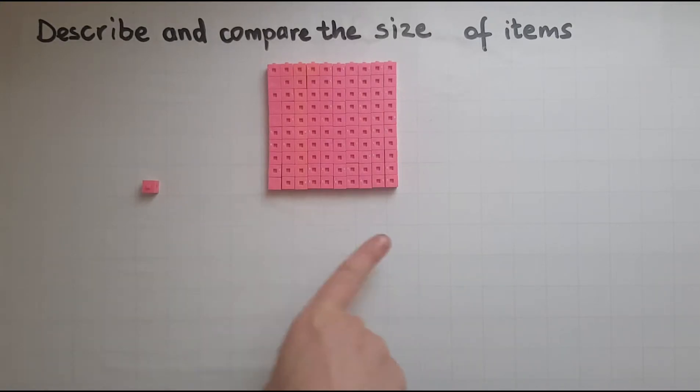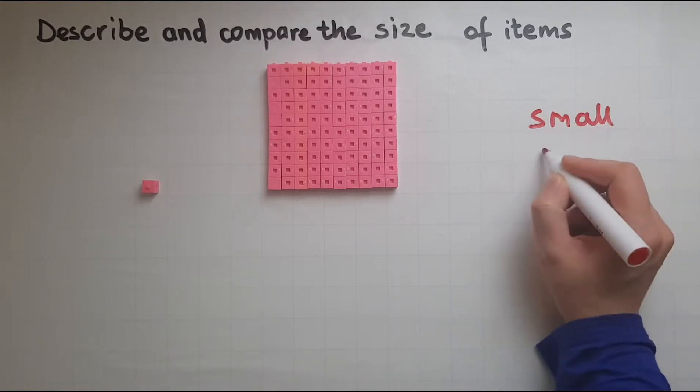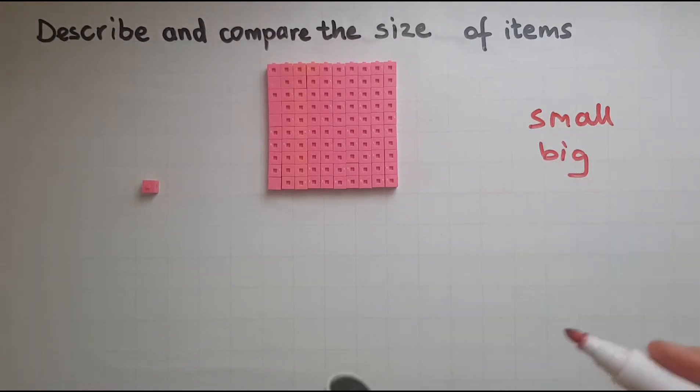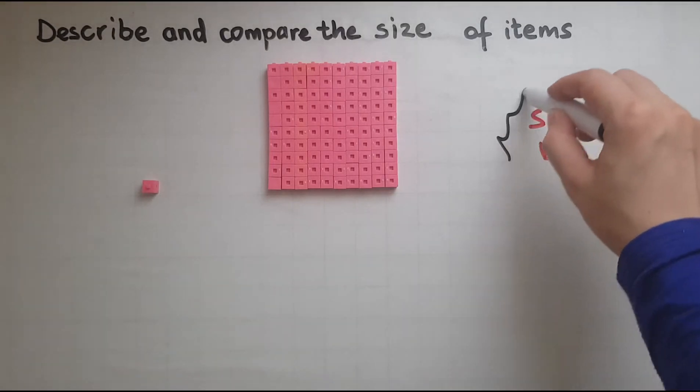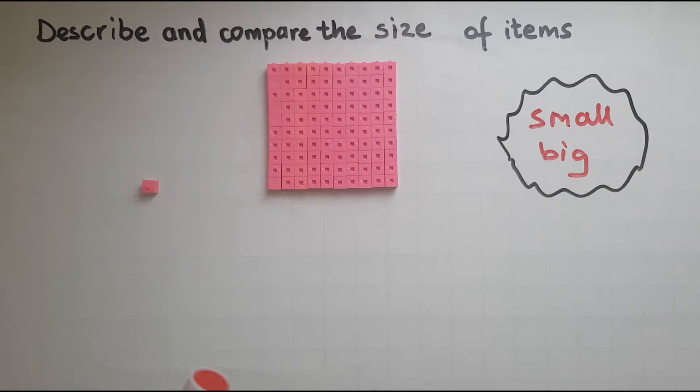So out of the two items that I have on the board, I say this is the small item and this is the big item. So small and big are the two keywords that we're going to be using to compare and describe size.